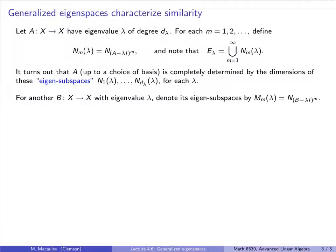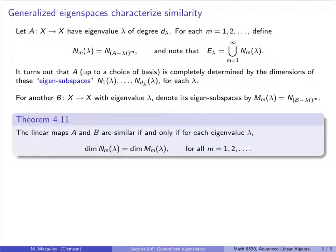To prove this, let's consider another linear map B with the same eigenvalue lambda, and denote its eigensubspaces by M_m instead of N_m. So M_m is the null space of B minus lambda I to the M. Formally, our theorem says that the linear maps A and B are similar if and only if, for each eigenvalue lambda, the dimension of the eigensubspaces for A equals the dimension of the corresponding eigensubspaces for B.